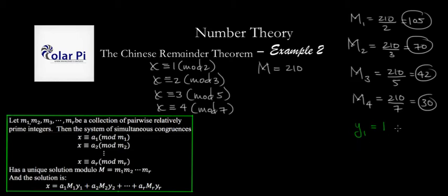And then, Y2 is equally easy. So, Y2, I'm trying to figure out where I should write it. Y2 is going to be, what times 70 is congruent to 1 mod 3? Well, 1, because 1 times 70 is 70, and 70 is 1 more than a multiple of 3, because 70 is 1 more than 69, and 69 is a multiple of 3.